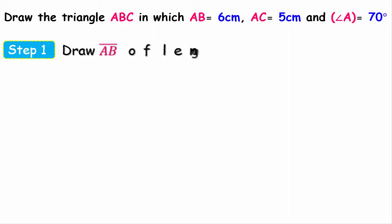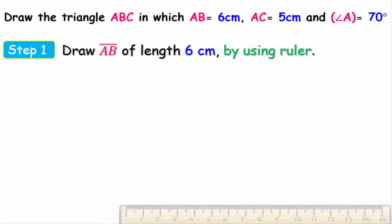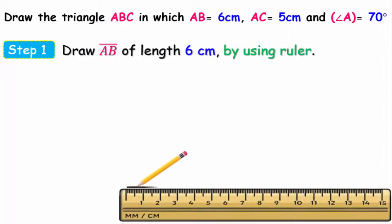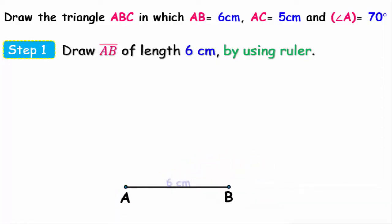The first step, by using the ruler, we'll draw the line segment AB whose length equals 6 centimeters as follows. And don't forget to write the start and end point for this line segment.